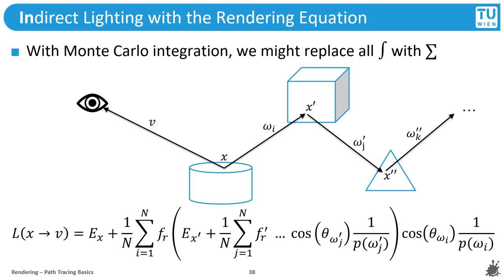Through intuition, you might want to use the same fixed number of samples for each sum, so every hemisphere on our path is equally well covered. This seems like a decent extension of what we had before — this time we take the full rendering equation without omitting any terms. Notice how we now have multiple sums and therefore multiple continuing rays emanating from every hit point along our path. Each of those rays will hit something and at that hit point spawn more rays to sample a hemisphere, which will then spawn more rays, and so on.